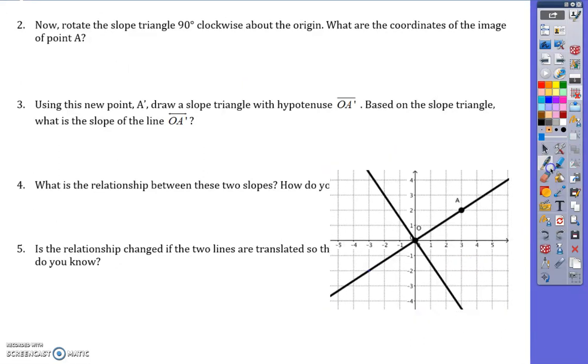You've got your slope triangle. Now rotate the slope triangle 90 degrees clockwise around the origin. You can use patty paper. 90 degrees clockwise means the same direction as the clock.